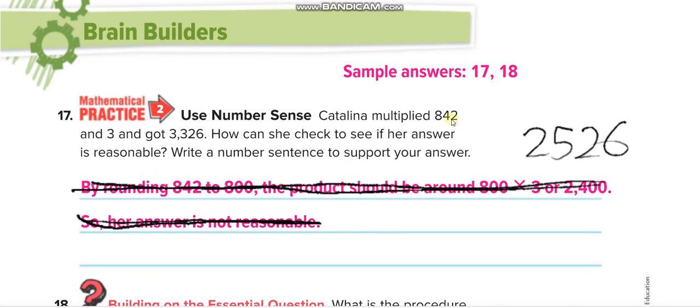Catalina multiplied 842 and 3 and got 3326, which is wrong, guys. When you multiply 842 by 3, you will get 2526. How can she check to see if her answer is reasonable? Write a number sentence to support your answer. Now, I told you on the first page how to check your answer. So you have to check your answers and let me know in the comment box how to check your answer about question number 17.